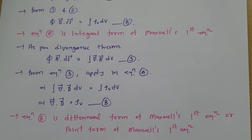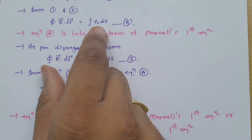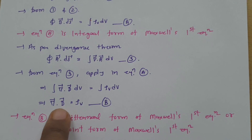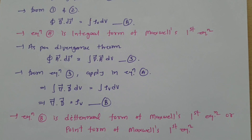So this is Maxwell's first equation in integral form and differential form. The integral form is: surface integration of electric flux density is equals to volume integration of volume charge density. The point form is: divergence of electric flux density is equals to volume charge density. This is Gauss's law for electric field, and based on that, these two equations are Maxwell's first equation. These equations are very useful to solve examples, and you should remember them as they are very important for competitive as well as university examinations. Thank you so much for watching this video.